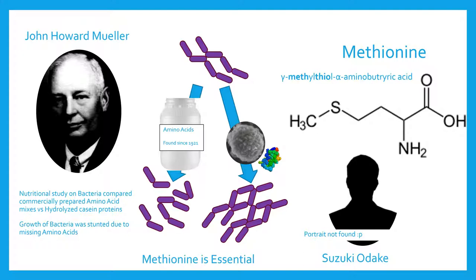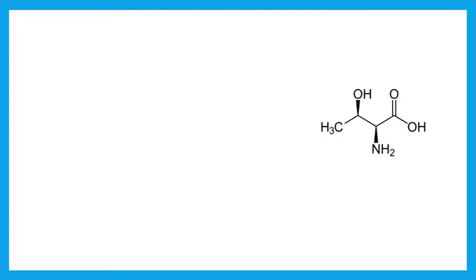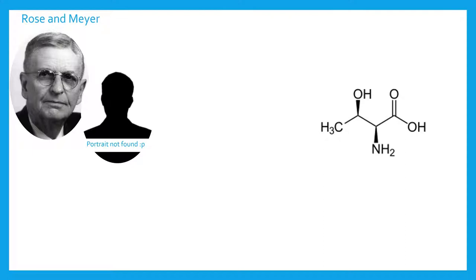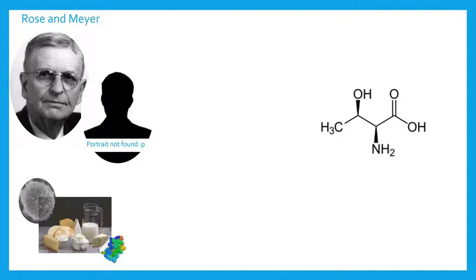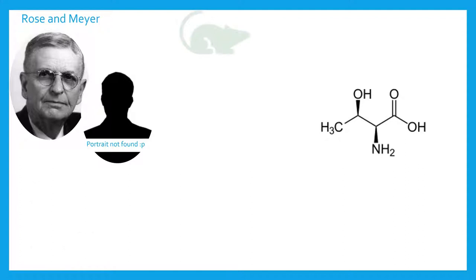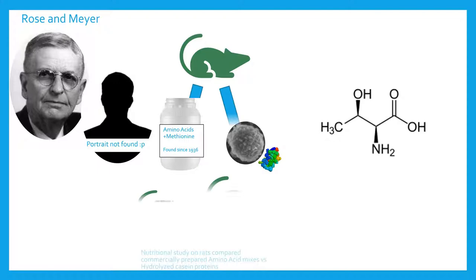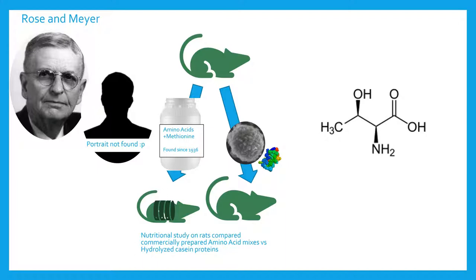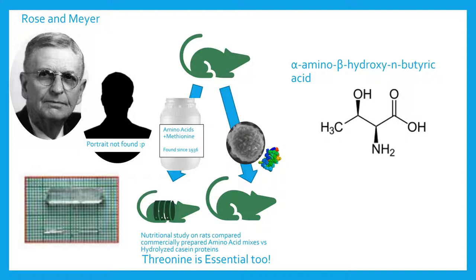Finally, we come to threonine, the last amino acid to be discovered. In 1936, American biochemists William Cumming Rose and Curtis E. Mayer discovered the amino acid in a similar way to John Howard Mueller. In one study, Rose fed rats a cocktail of the 19 previously discovered amino acids and observed the rats losing weight in comparison to those fed with lysates of caseins. He concluded that another essential component was missing, and through an exhaustive series of experimentation, Rose and Mayer were able to isolate and then crystallize the missing component.